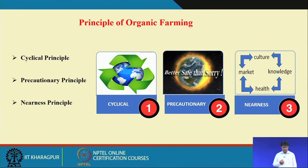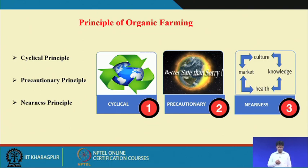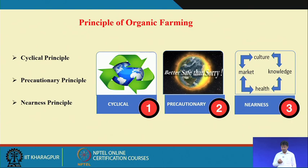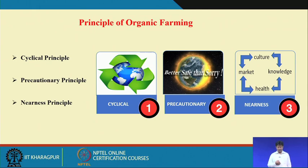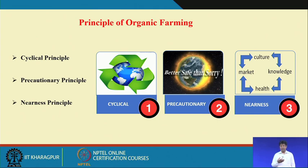The second principle is the precautionary principle: better safe than sorry, meaning prevention is better than cure. We should not use any materials that are not allowed in organic farming. It is better to avoid the use of any chemical insecticides and pesticides. The third is the nearness principle — transparency and trust building, which is very important in organic farming. When a product is said to be organic, it should be truly organic.